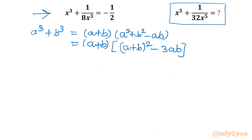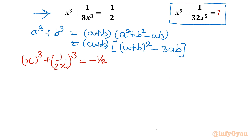Now I will apply this formula here. I will write (x + 1/(2x))³ = -1/2, treating x³ + 1/(8x³) in this factored form and applying the identity directly.